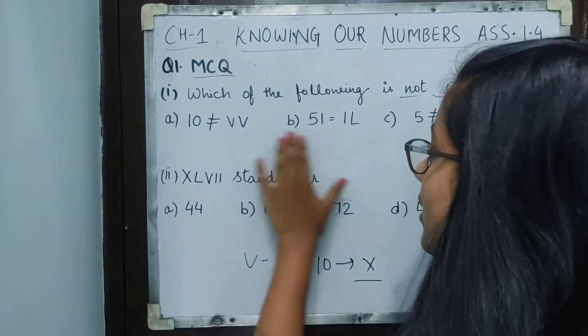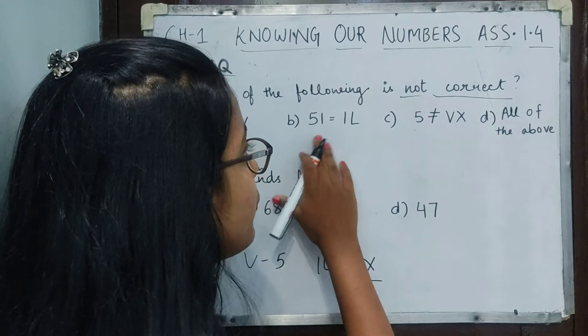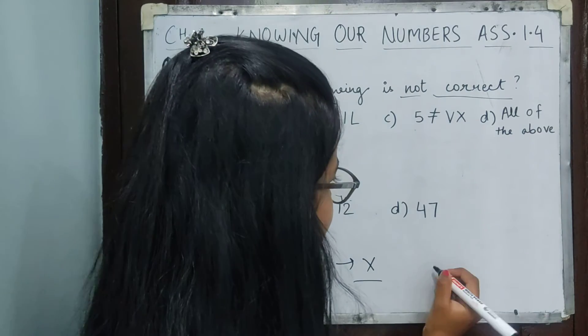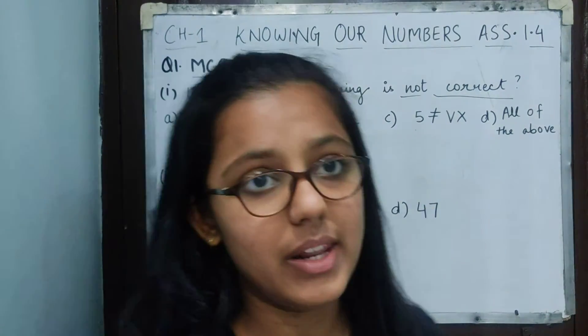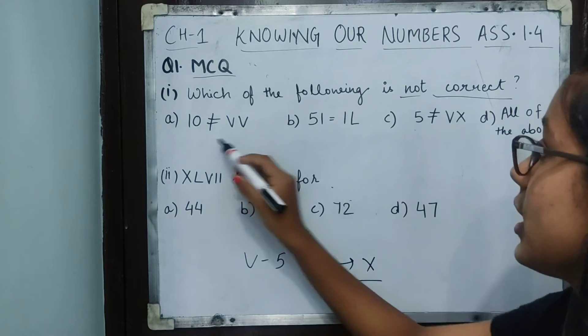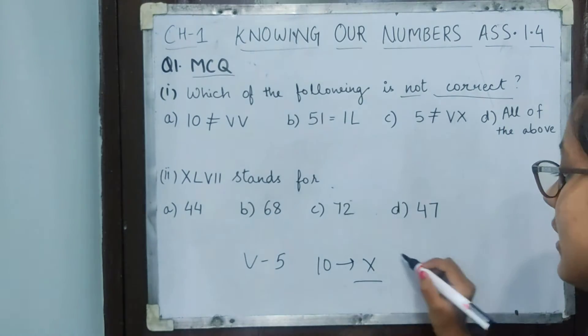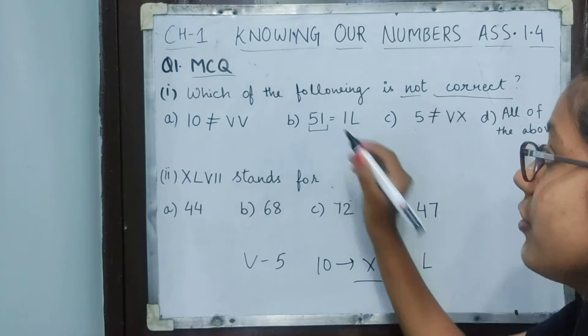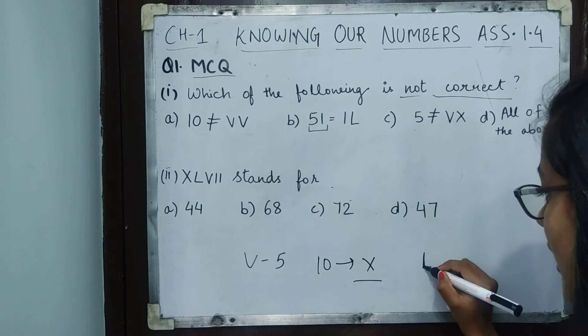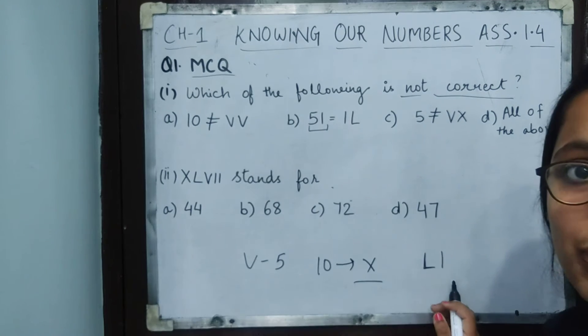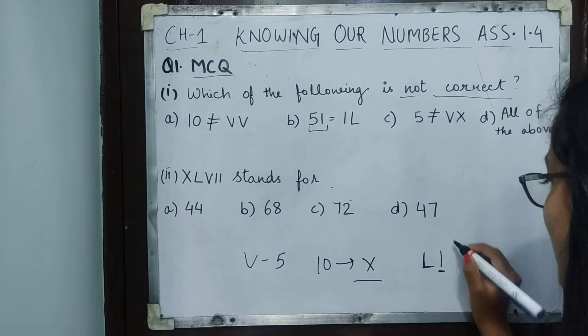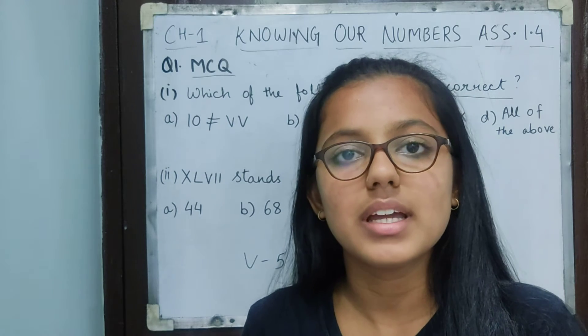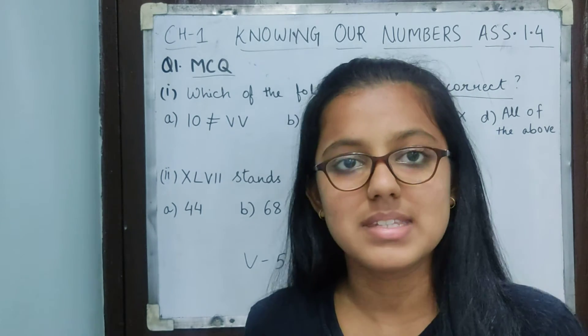Coming to option B: 51 = IL. Our question was which of the following is not correct. Now L means 50, and the question is 51. So if we have to make 51, we need to put I after L because I means 1. If I is placed on the right side, it means plus. Any letter placed on the right side means plus, and if placed on the left side means minus.